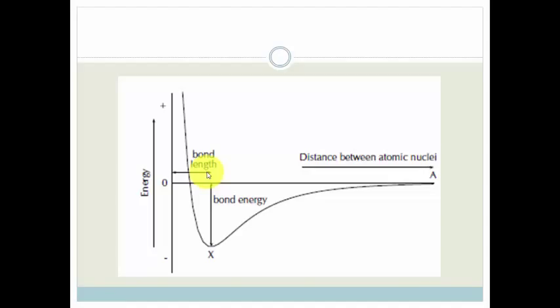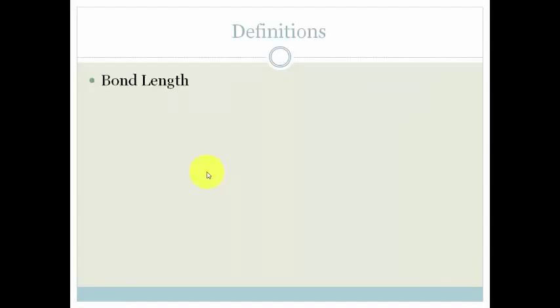So let's get a little bit more specific about our definitions. Bond length is the distance between the nuclei of two adjacent atoms when they're bound. The distance between the nuclei.